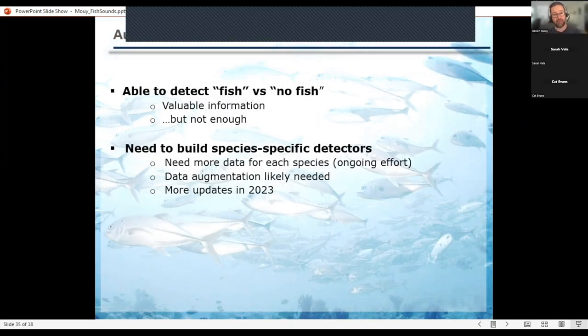So now it's nice to detect fish versus no fish, but it's not quite enough. We need to know what species are making this. So we're collecting and identifying fish sounds, but our dataset is still limited. So we're building that effort. It's still ongoing. And so the next step will be to build detectors or classifiers that can actually distinguish each species. And that's something we're working on and there will be some updates.